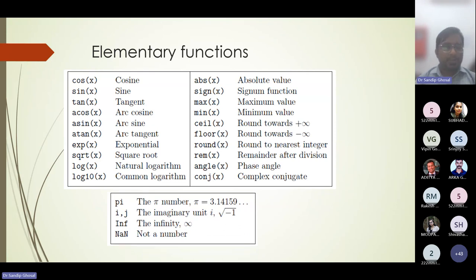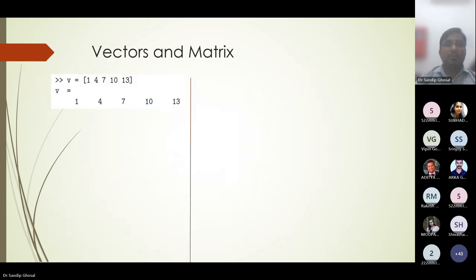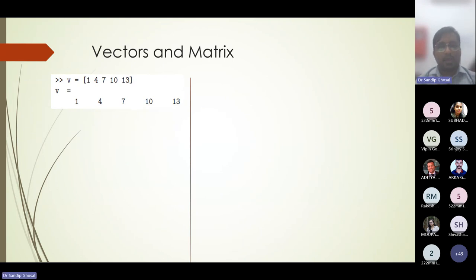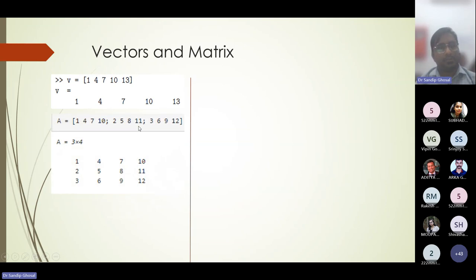Numerical constants like pi and e are available up to a certain precision; for more accuracy, set 'format long'. For scalar data — a single number — if you have a sequence along one axis, that's a vector, either row or column. The transpose operation is done with a single quote or dash, converting a row vector to a column vector or vice versa.